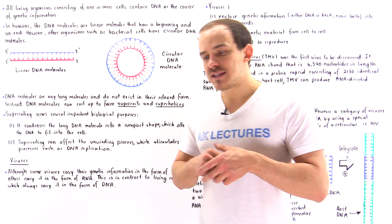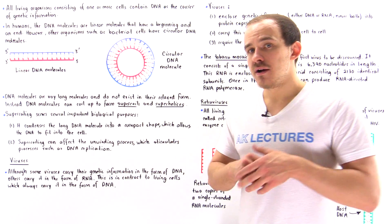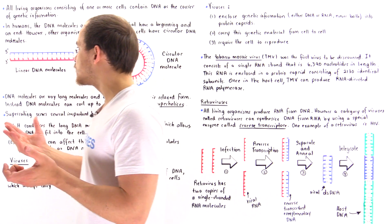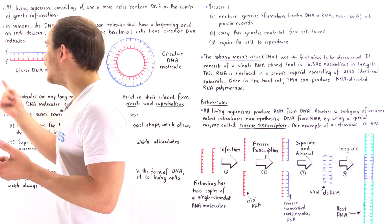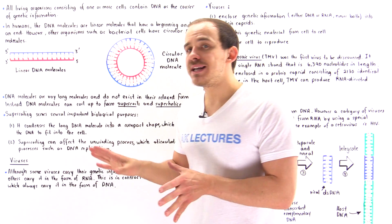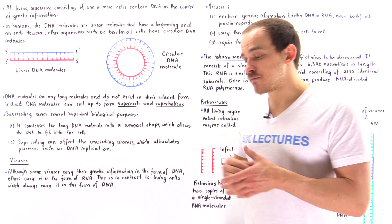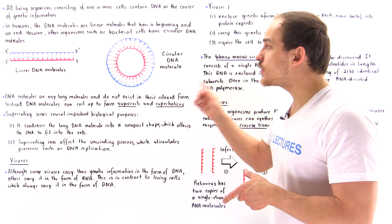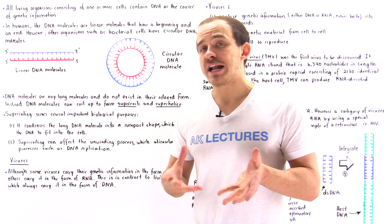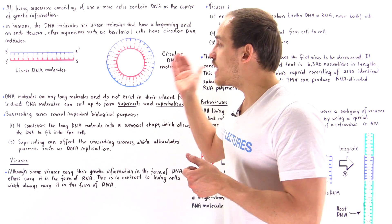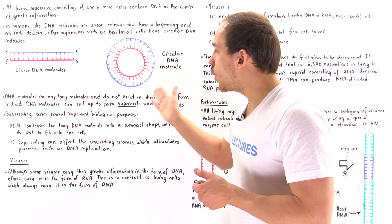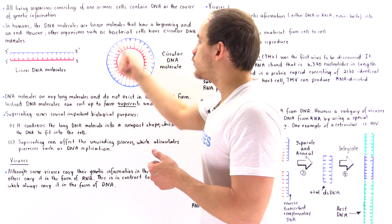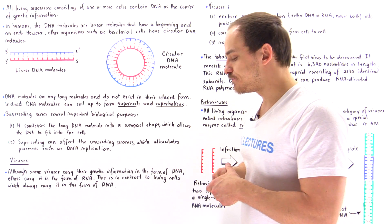In human cells, we have linear molecules of DNA, meaning they have a beginning and an end. But in other organisms, for example bacterial cells, they have circular DNA molecules, which means they don't have a beginning or an end — they are continuous, as we see in the following circle.